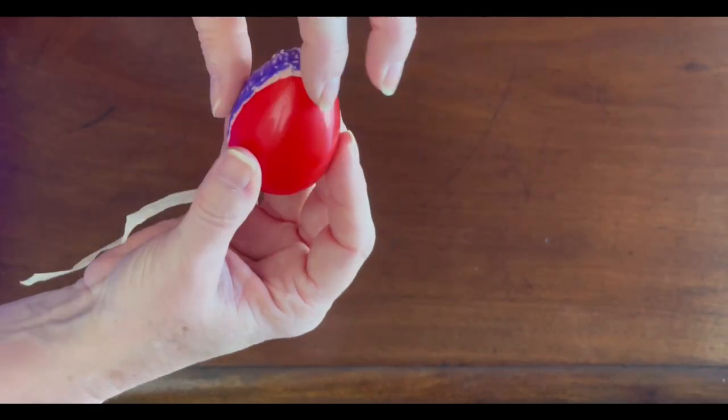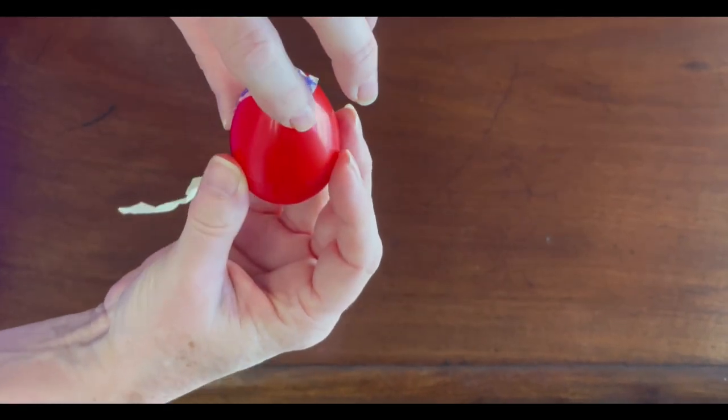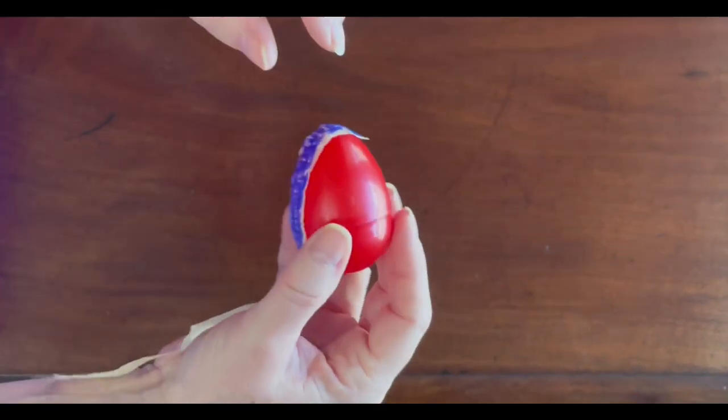Just attach the masking tape to the top of the egg and color blue the part that's going to represent the epididymis.